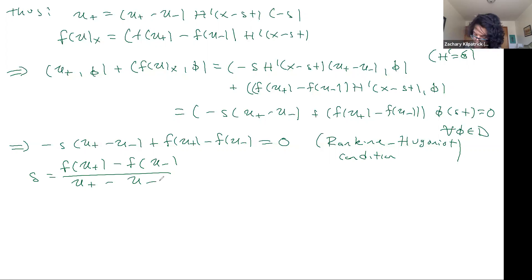So we have that S is equal to F of U plus minus F of U minus divided by U plus minus U minus. It relates the shock speed to the shock jump.